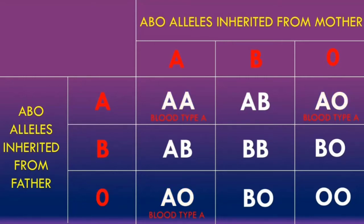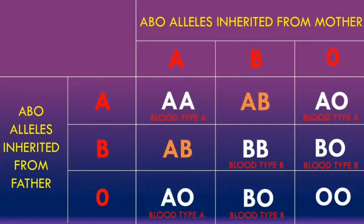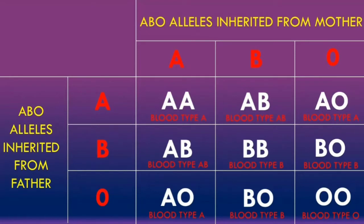A person with a genotype of BB will have an ABO blood type of B, and a person with a genotype of BO will also have an ABO blood type of B, as the B allele is dominant to the recessive O allele. A person with a genotype of AB will have an ABO blood type of AB, as the A and B alleles are co-dominant, so both alleles will be expressed. And finally, someone with a genotype of OO will have a blood type of O.